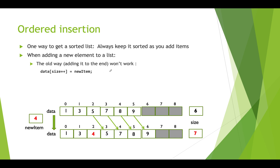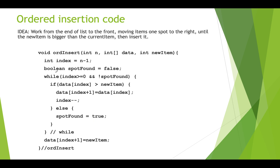The old way of adding items to arrays is to just add things at the end with a pointer to where the next empty slot is, and that's not going to work here. So what we're going to do is follow this algorithm. The idea is that we work from the end of the list — the far right — and move backwards towards the front, moving each item one spot to the right until the new item we want to insert is actually bigger than the current item, and then we insert it.